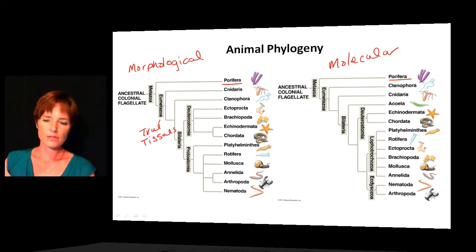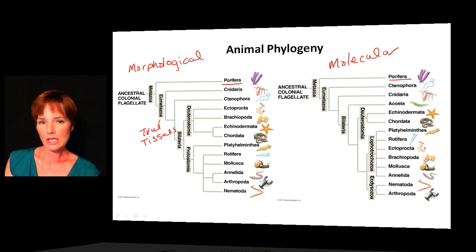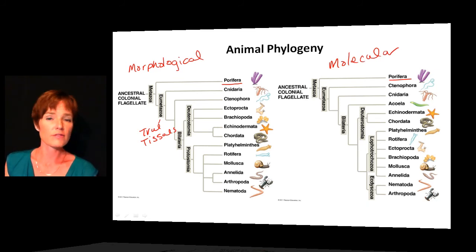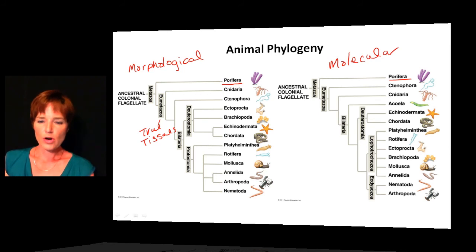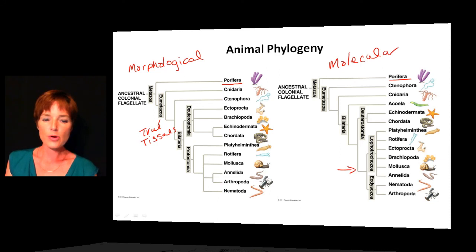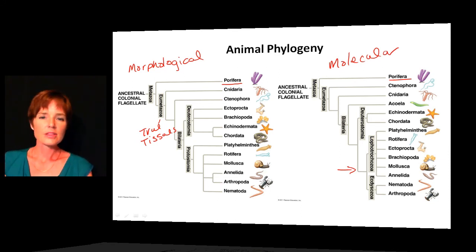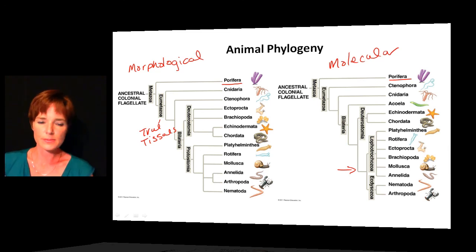After that they do differ somewhat, and those differences will be explored in later chapters as we start talking about individual animal phyla. Note that in the molecular data tree, we no longer recognize the Protostomia as a single group — it is split into the Lophotrochozoa and the Ecdysozoa groups.